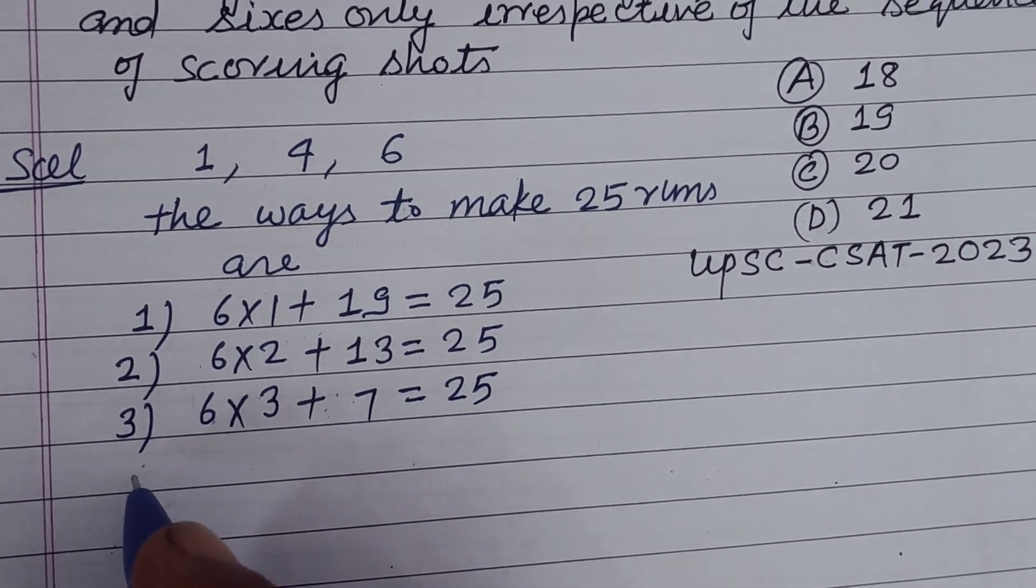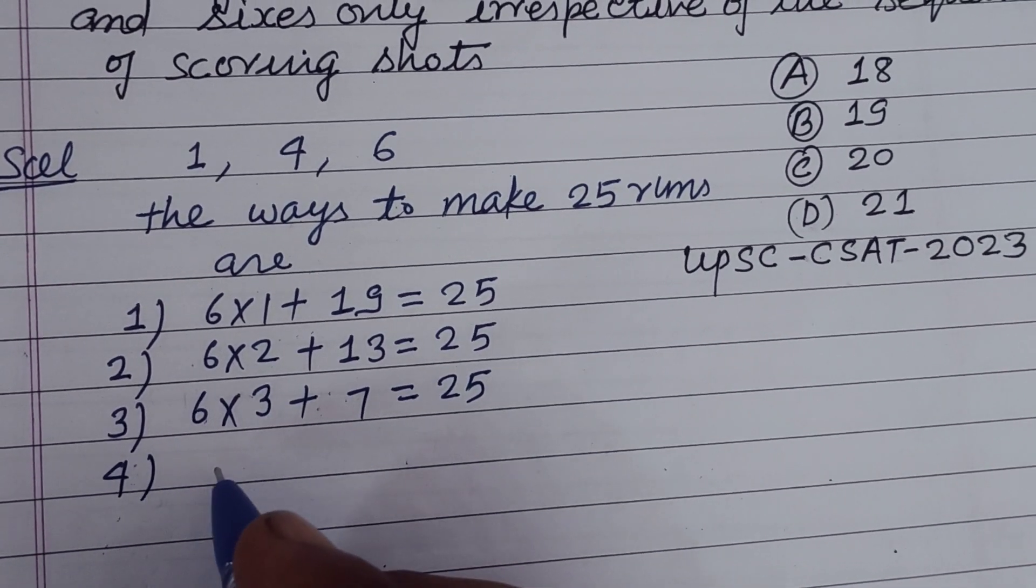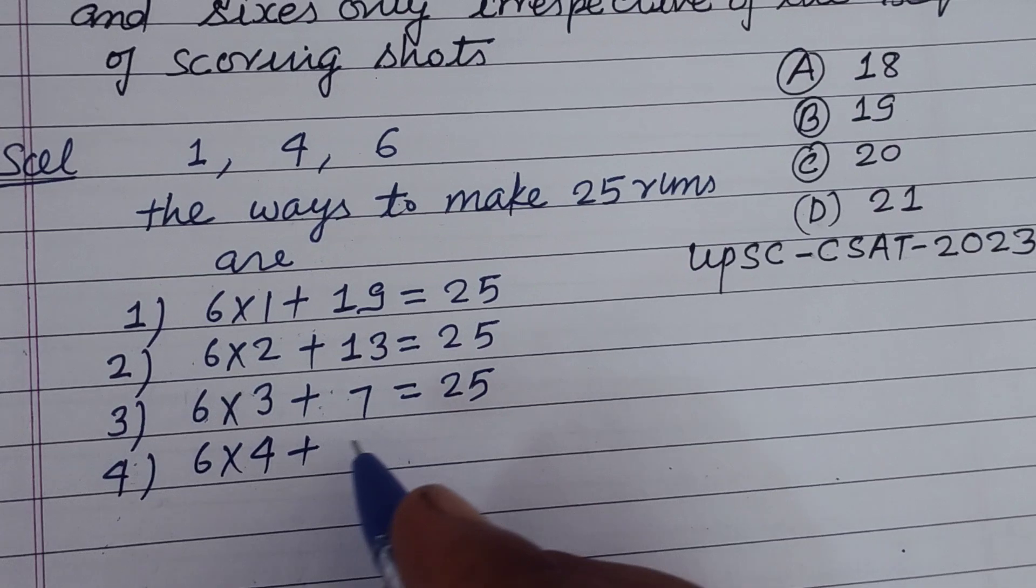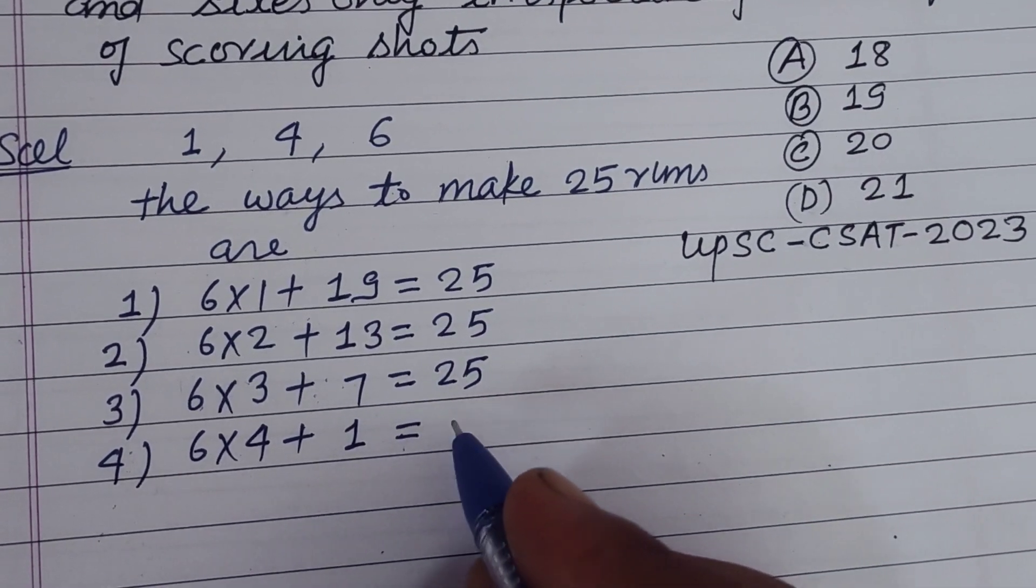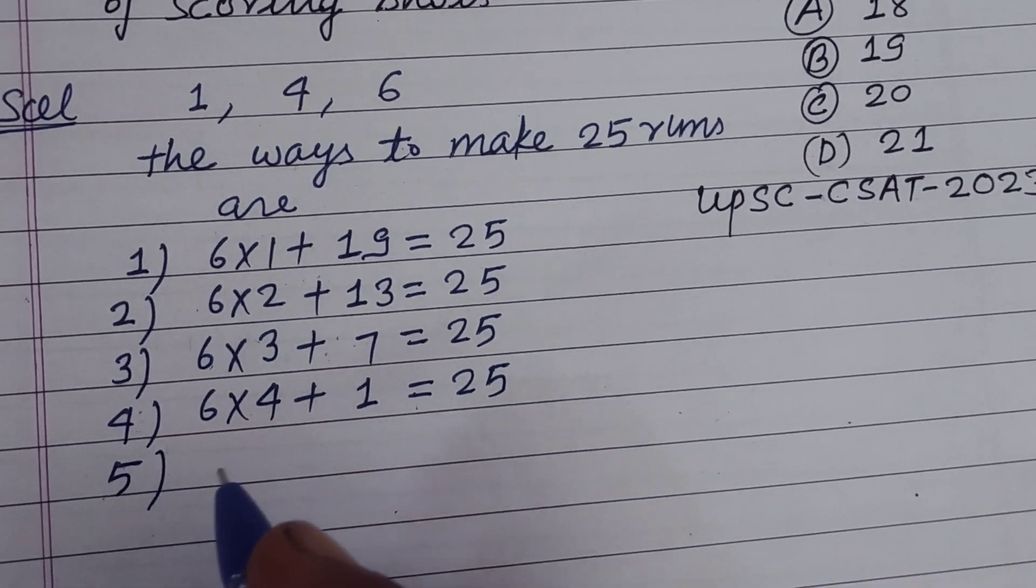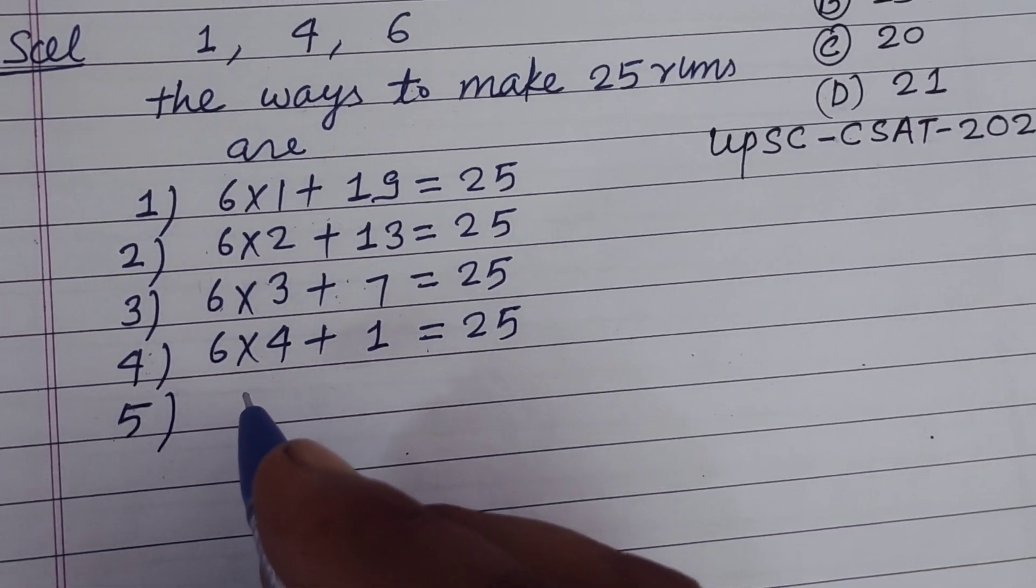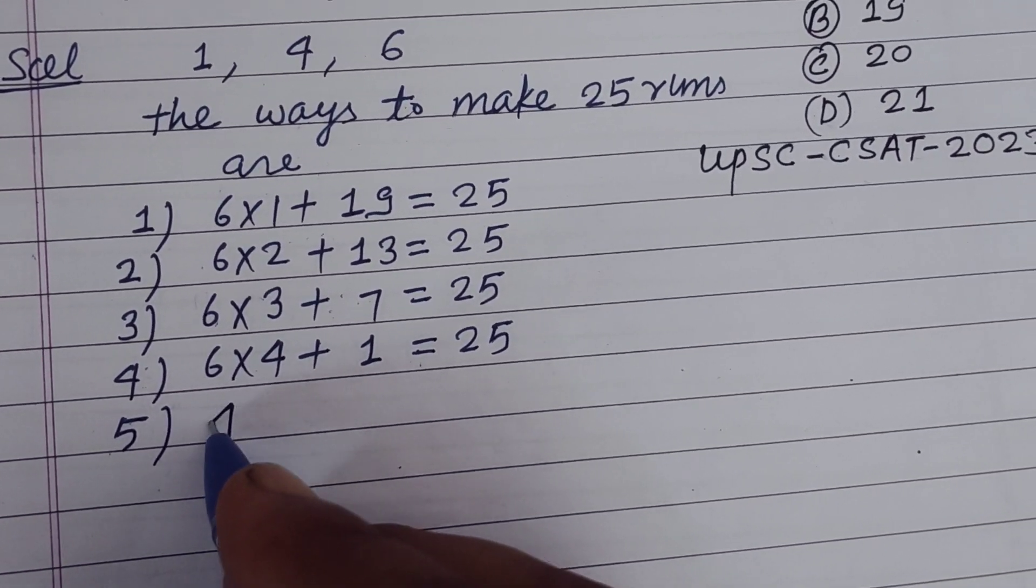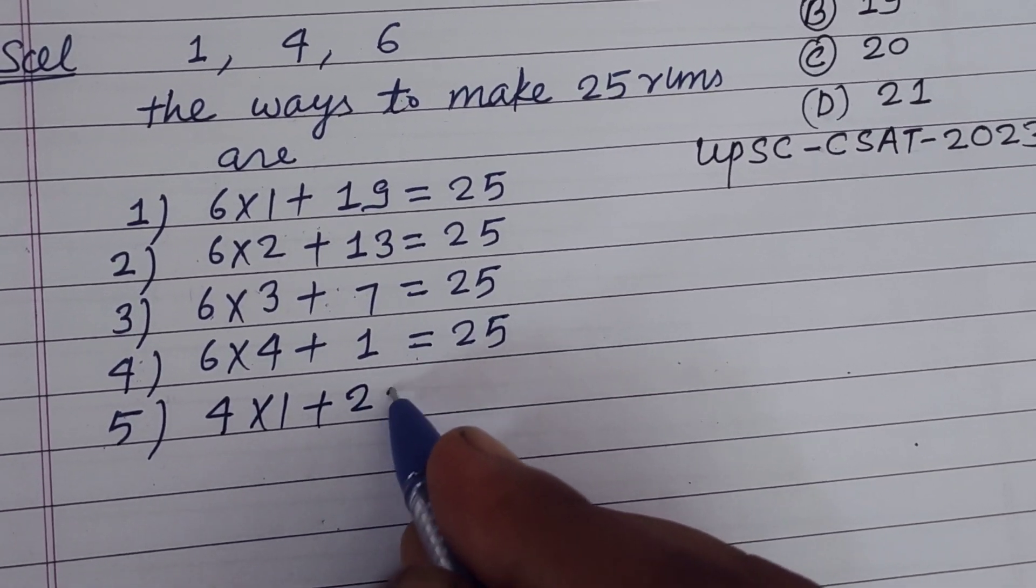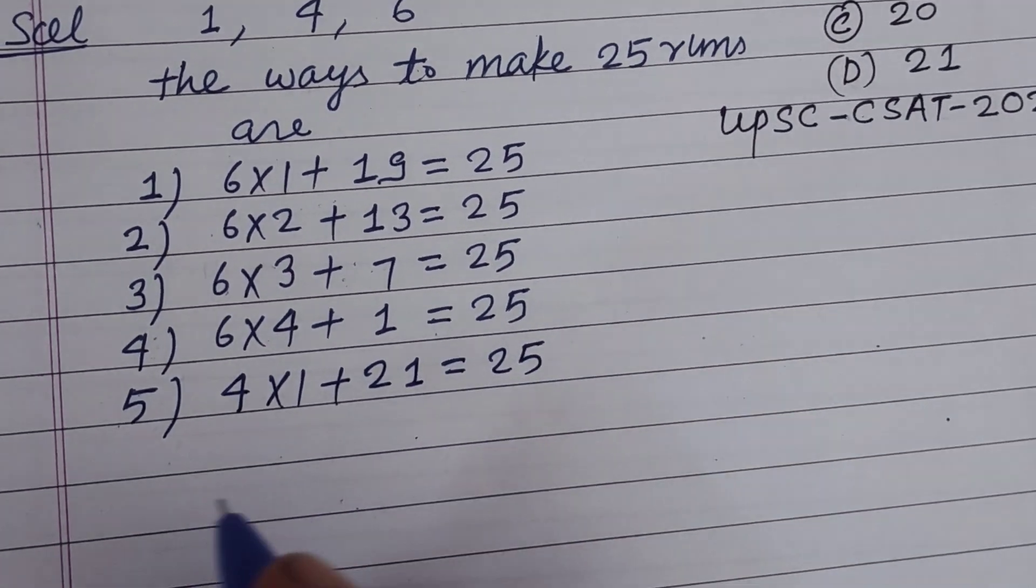Fourth condition is 6 into 4 and 1 single, so also 25. Fifth condition is 4 into 1, 1 four plus 21 single runs, this is 25.